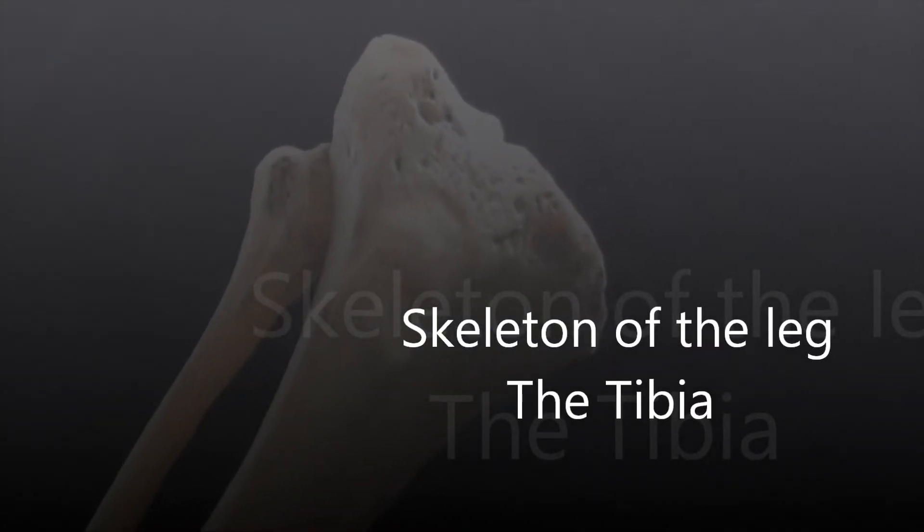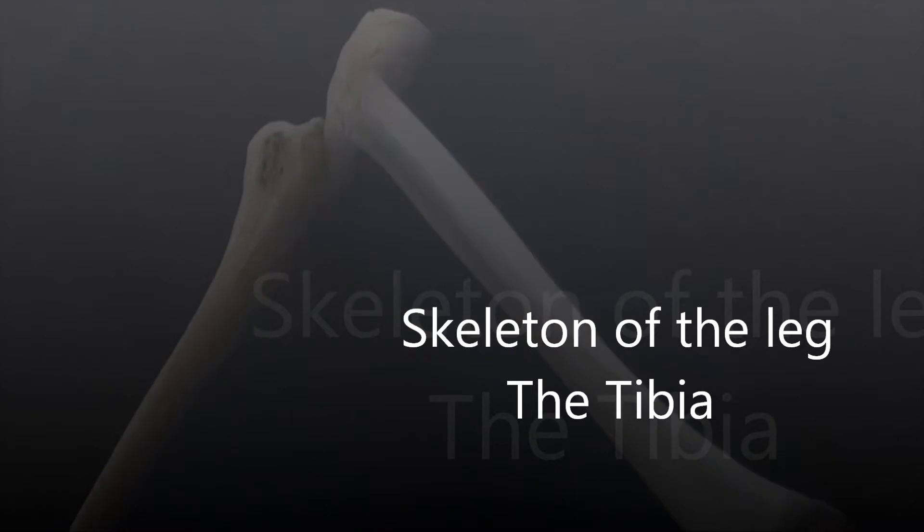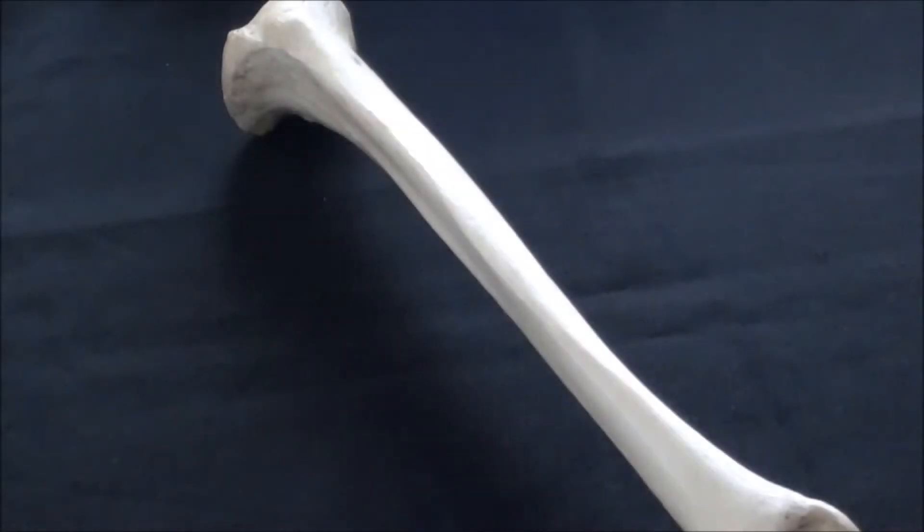Skeleton of the leg: tibia and fibula. We're now going to take a look at the skeleton of the leg. When using the term leg, or cura in Latin terms, we actually refer to the part of the lower limb which is situated between the knee and ankle joints.